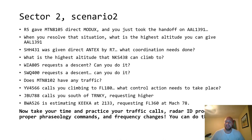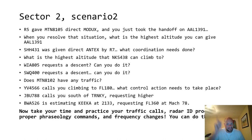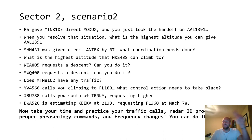Party people, here we are. This is Sector 2, Scenario 2. You just saw it and you're going to see it again after this slide. R5 southbound 8105 direct MODX, and you just took the handoff on American 1391 — beautiful, we're going to have to solve that. When you resolve that situation, what is the highest altitude you can give American 1391? Keep in mind there's a sky high somewhere north of St. Thomas. And sky high 431 was given direct Antics by satellite — what coordination needs to be done? Probably a point out. Going direct Antics off of Beef Island, the way they turn is probably going to clip a bit of R4 and R6 airspace, so they'd make their way westbound towards Santo Domingo.